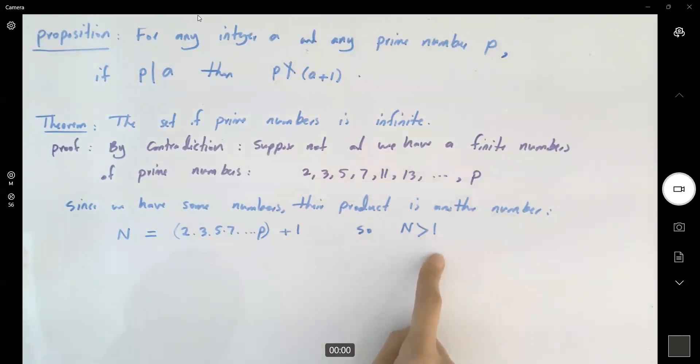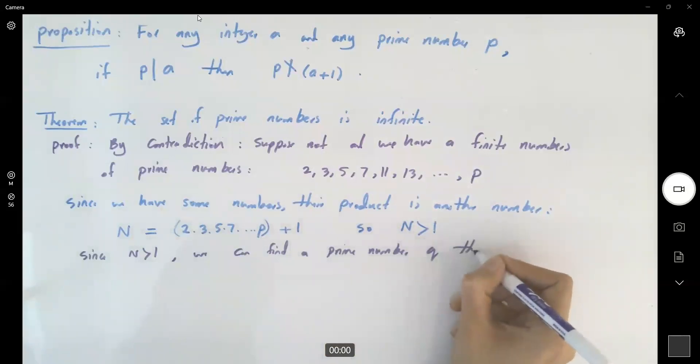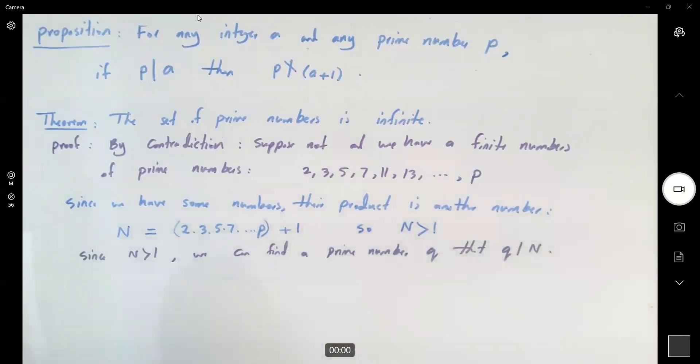Since n is larger than 1, you can find a prime number that divides n. It's a theorem that we proved. Since n is larger than 1, we can find a prime number like q that q divides n. So far so good.